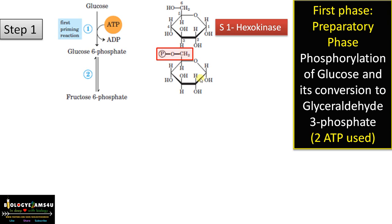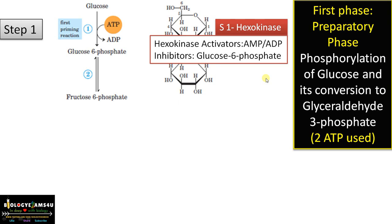Once glucose is inside the cell, hexokinase phosphorylates glucose so that it cannot be moved out of the cell, as glucose transporters will not take phosphorylated glucose outside. This is a regulatory step controlled by hexokinase, which is activated by AMP and ADP — indicating low energy levels — and inhibited by glucose-6-phosphate, the product itself, a kind of feedback inhibition.